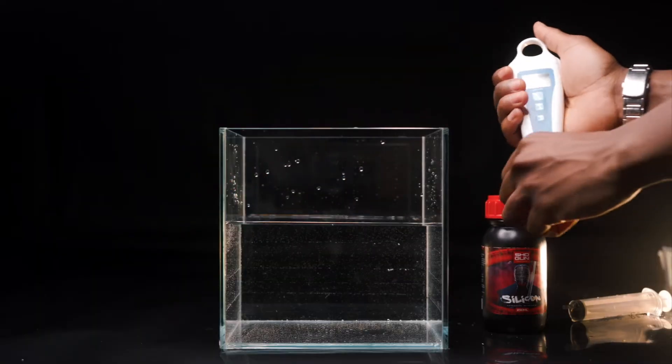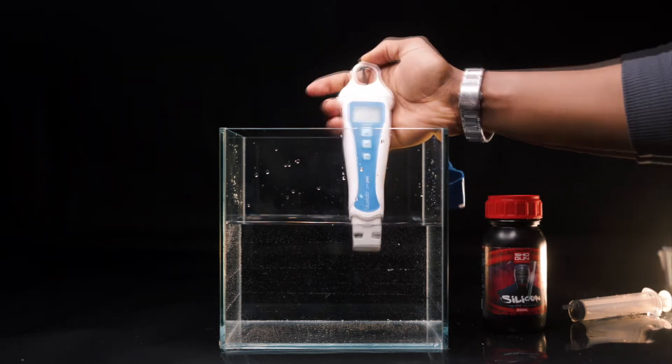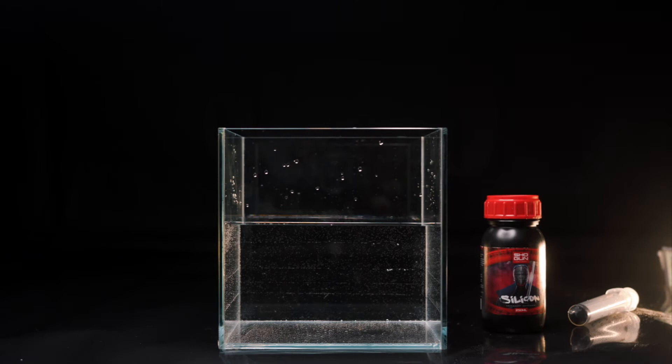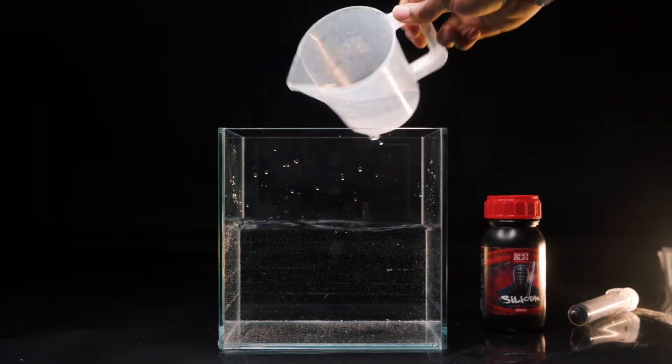Step 4: Check your pH. After adding Shogun silicon, your pH should rise. Make sure you add pH down until it reaches 7. You want to check the pH after and repeat this process until it reaches a pH of 7.